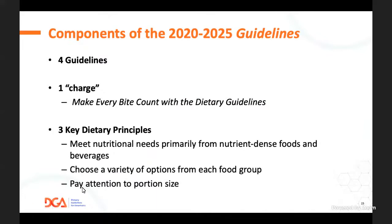Taking a big picture view, there are four guidelines—fairly simple overall. There is one overarching charge: 'Make every bite count with the dietary guidelines.' This actually came out of the B24 subcommittee when looking at complementary foods and early feeding of infants and children, when we realized there's just not a lot of room in the diet, particularly for added sugar.